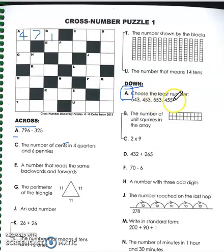So if this says choose the least number, 543, 453, 553, 455, what's the smallest or the least number? I think it's got to be this one right here, 453, which makes sense because if we come back up to A, 4 has to be the first digit. But now we're writing the answer down, so if 453 is our answer, then we've got the 4 and then coming down we've got our 5 and our 3.